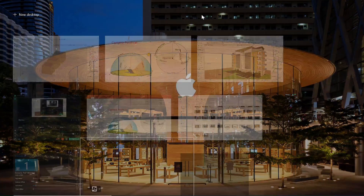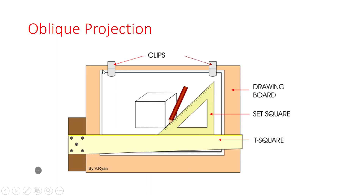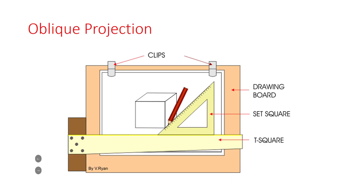Next, let's look at the different axes. There are two common projections in axonometric: isometric drawing, which has 30 degrees on each side with the Z-axis at 90 degrees parallel to the ground; and oblique, which has one side parallel to the ground at zero degrees and the other at 45 degrees. These are the two most common layouts you will find in axonometric drawing.